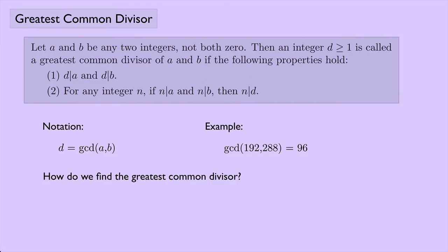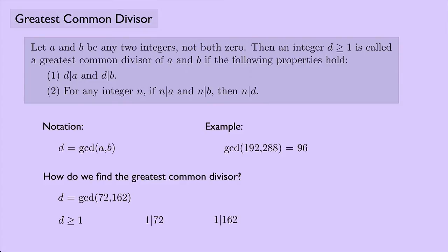So how do we find the greatest common divisor? Let's look at the greatest common divisor of 72 and 162. We know that the greatest common divisor has to be greater than or equal to 1 — it's in the definition. We know that 1 divides 72 and 1 divides 162, so we know that at least we have 1. But what else do we know?